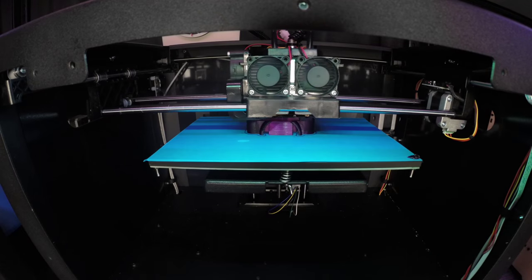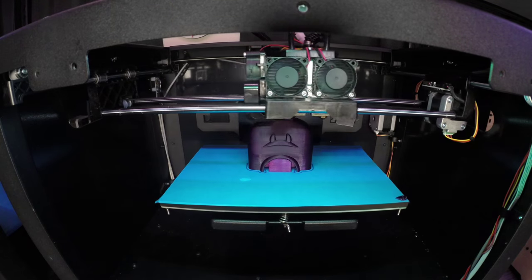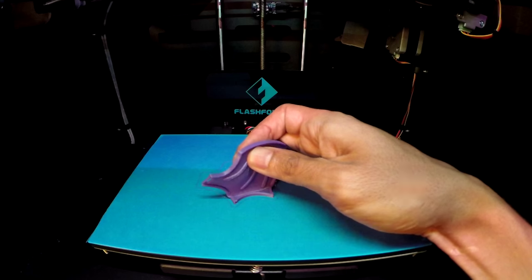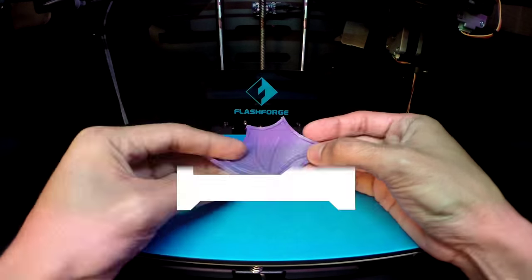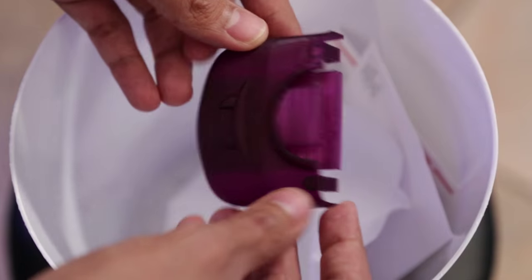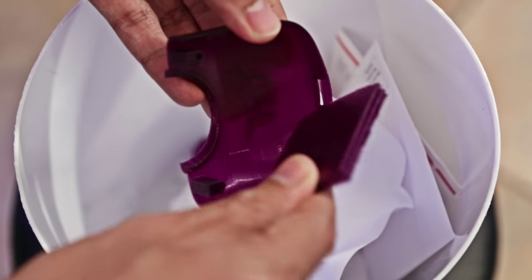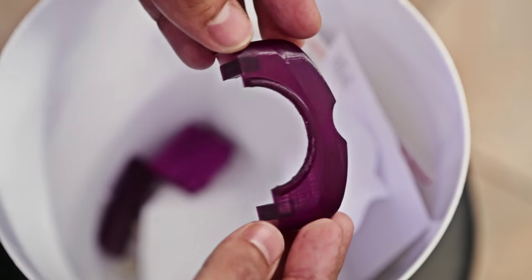The parts will fit on most 3D printers and will require some support material. The wings work best in TPE filament like this purple colored NinjaFlex. Using support material helps print overhangs and is actually pretty easy to remove with your bare hands.